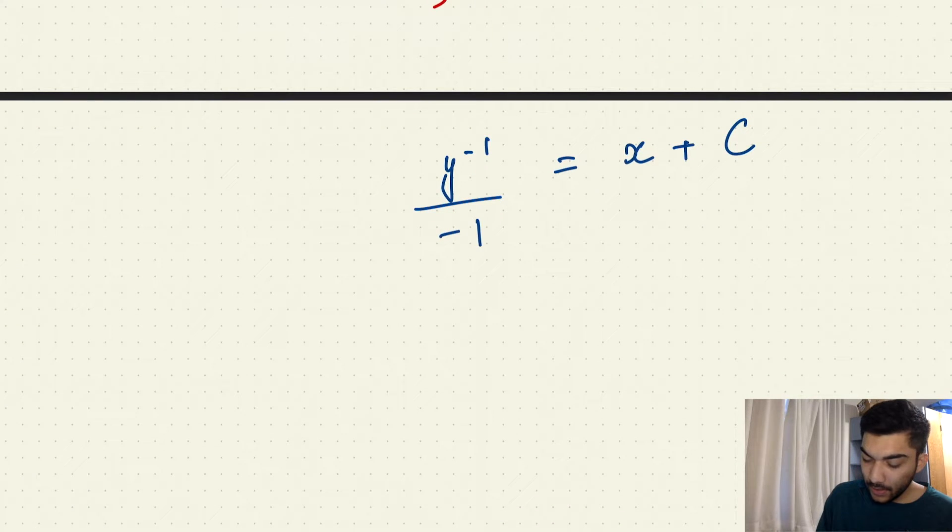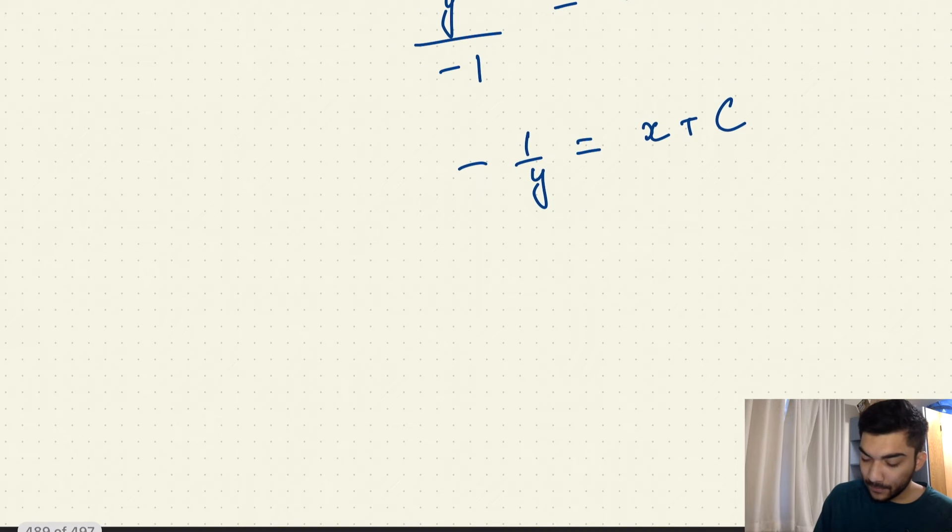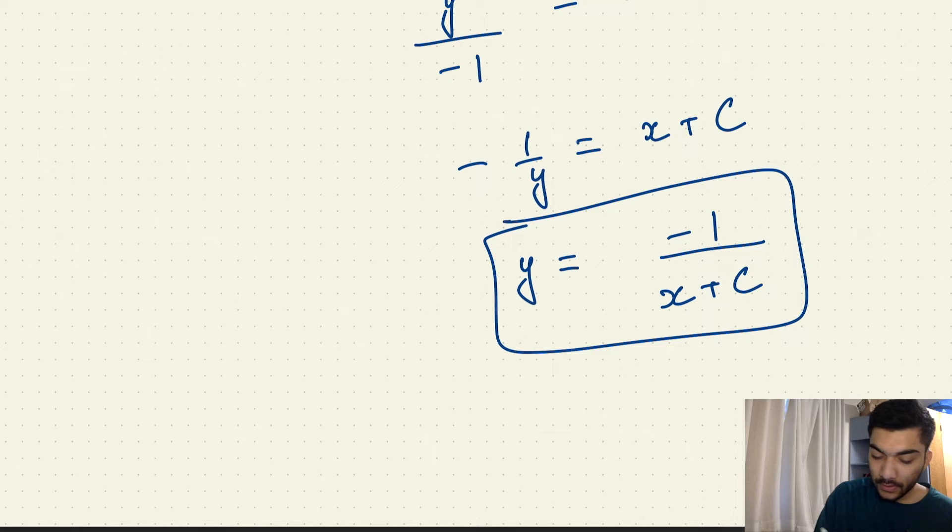And now if we simplify this equation, it will basically be minus 1 over y equals x plus C. So it will be y equals minus 1 over x plus C. So this is your function y in terms of x, and this will be your solution to your differential equation.